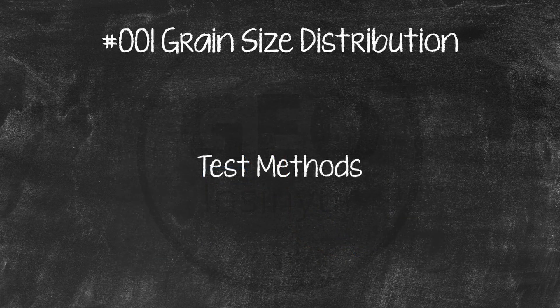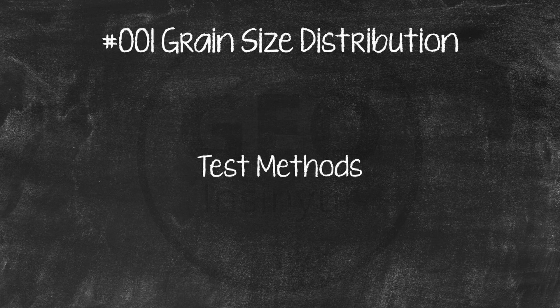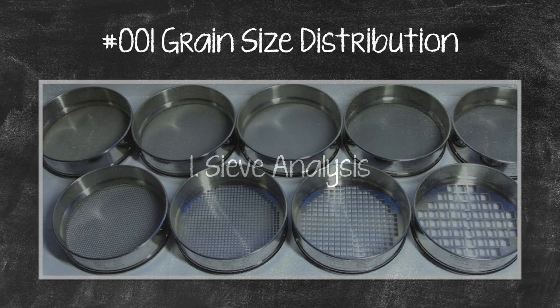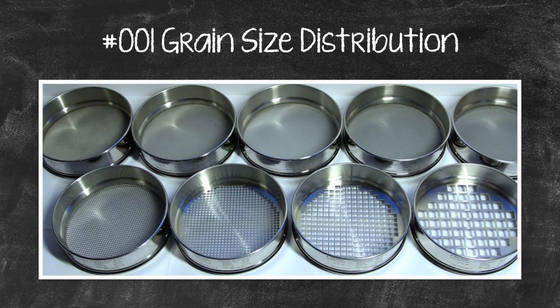Test Methods. Two laboratory test methods are used to determine the distribution of particle sizes by dry weight in a soil or material sample. Sieve Analysis is used to obtain the grain size distribution of coarse grain soils, sands and gravels larger than 0.075 mm retained above number 200 sieve.